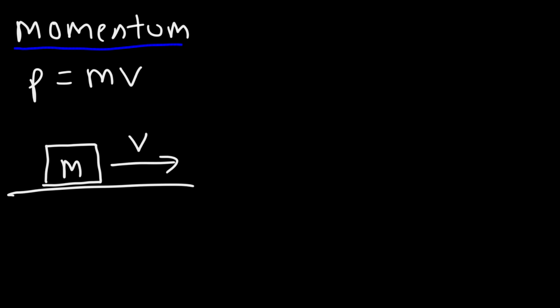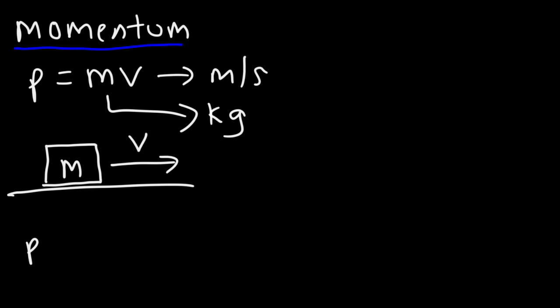A train that's moving fast has a lot of momentum. It has a lot of mass and it has speed, so it's very hard to stop an object with a lot of momentum. The units for momentum: mass is in kilograms, velocity is in meters per second, so momentum is kilograms times meters per second.